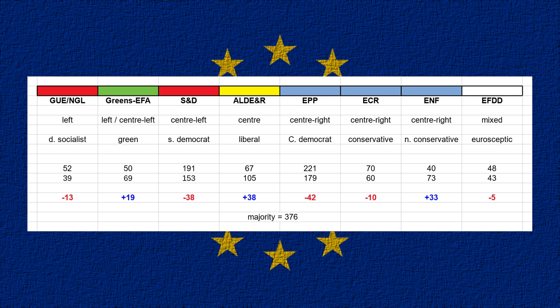I'm giving 15 more seats to the ENF because the AFD are going to join that group, along with the Danish People's Party, the Finns Party, and one MEP from the Conservative People's Party of Estonia. The ENF is essentially going to be replaced by the EAPN — Salvini's new group — which is the ENF with a few extra parties. I'm giving EFDD a lower total because I'm not counting the AFD in their number as the AFD are going to leave that group.